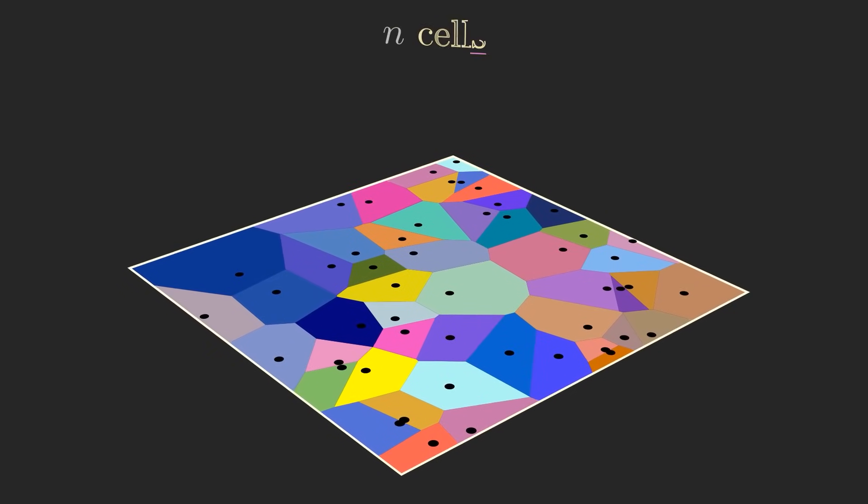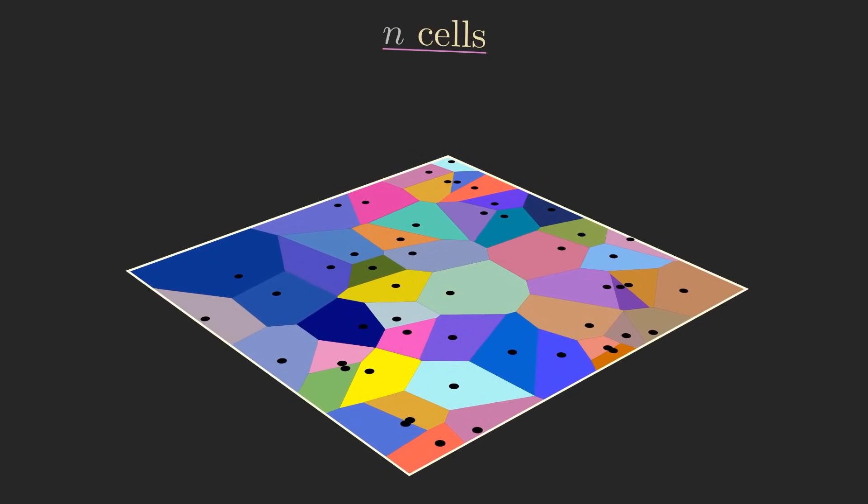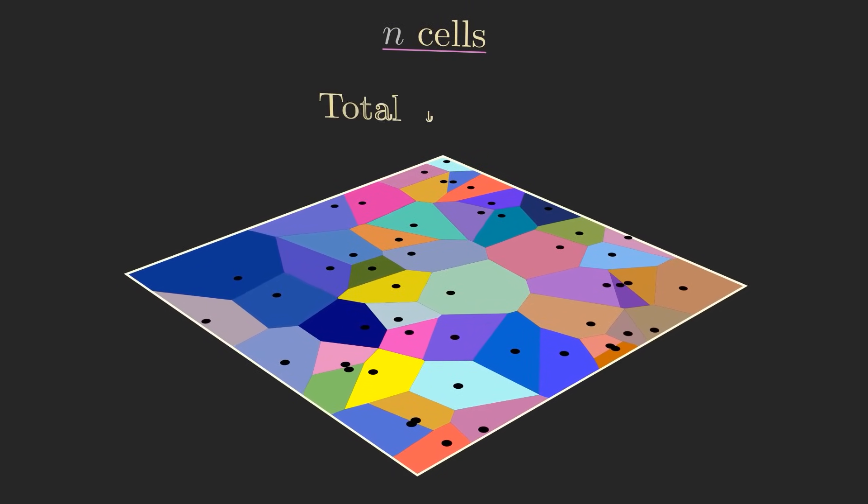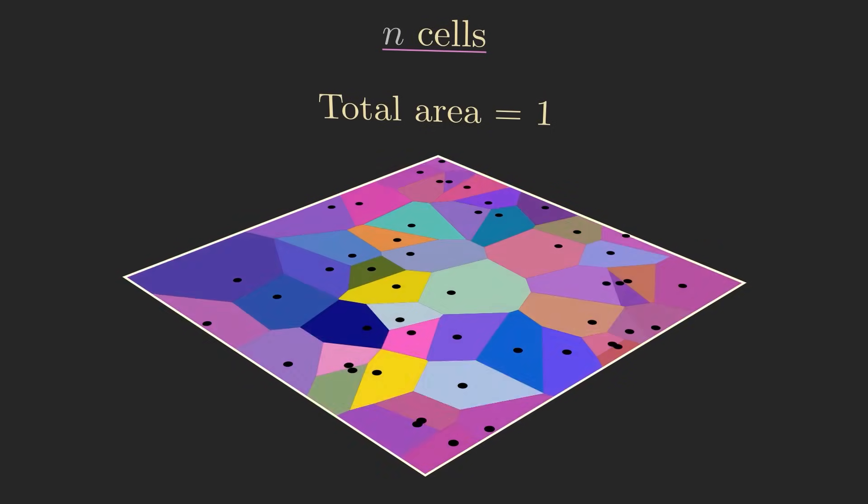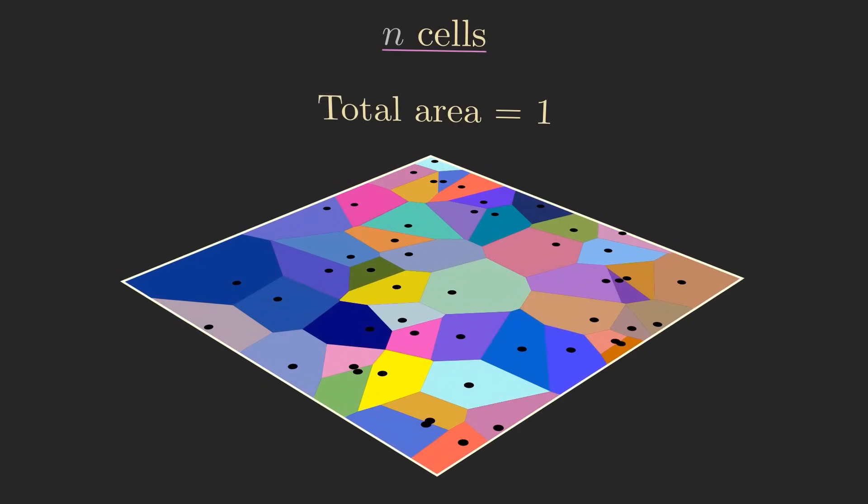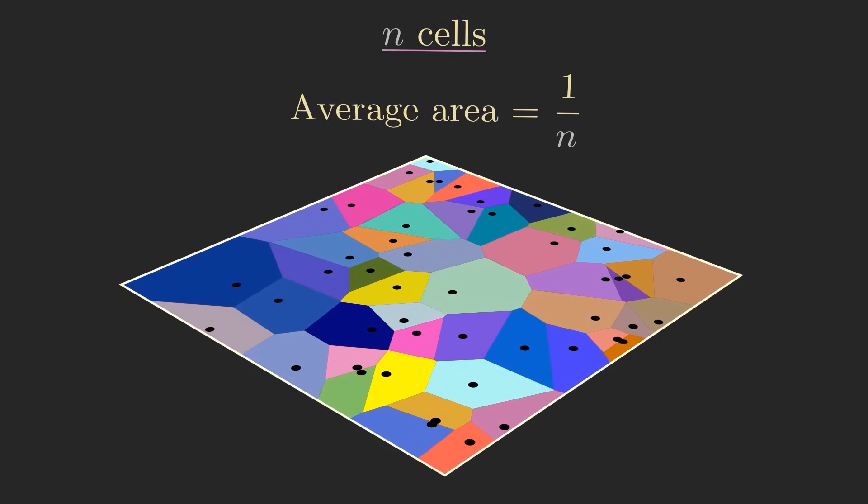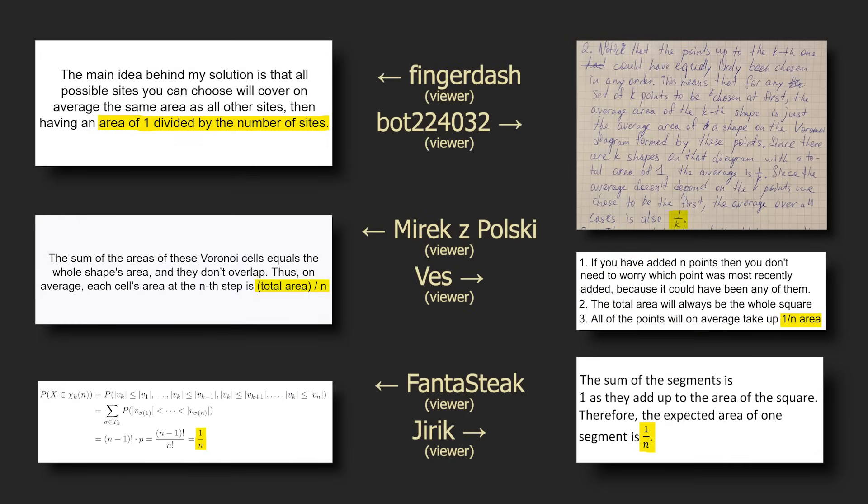If there are n cells, then because all of them together fill up the whole area of the square, which is 1, we can expect any individual cell to on average take up an area of 1 over n. You can make this rigorous in several different ways.